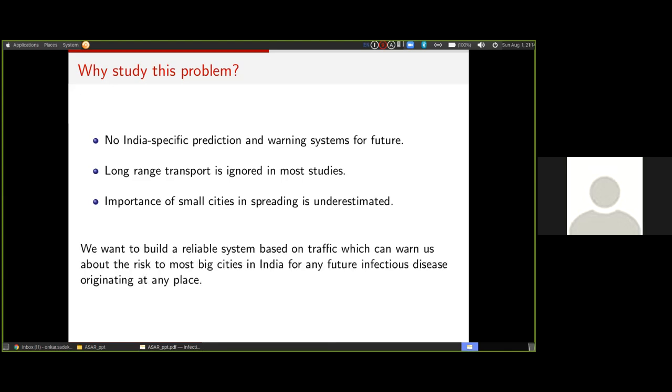The virus or infection can take a route which goes through a particular smaller city, and hence it changes the later dynamics of how it spreads. Hence it's important or necessary to take small cities into account while modeling such a type of problem. Based on this, we wanted to build a reliable system based on traffic which can warn us about the risk to most big cities in India for any future infectious disease originating at any place.